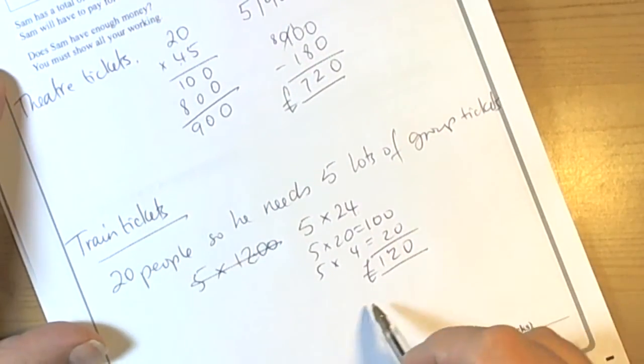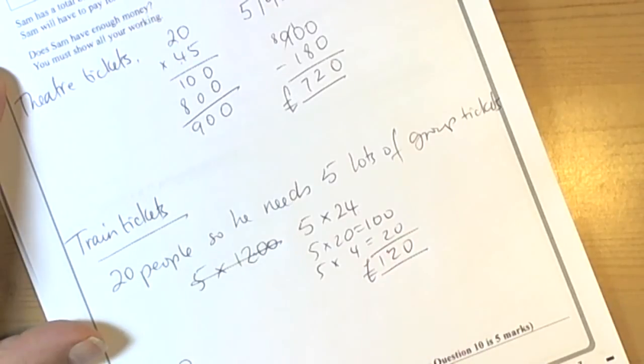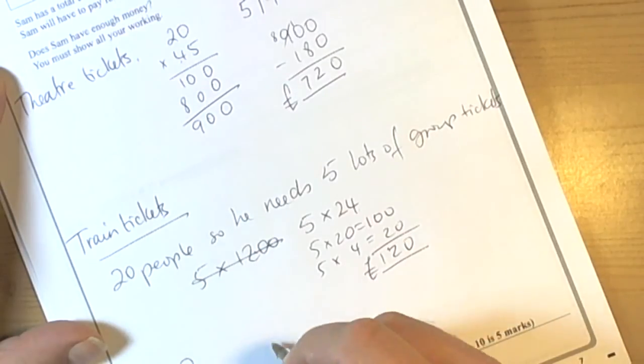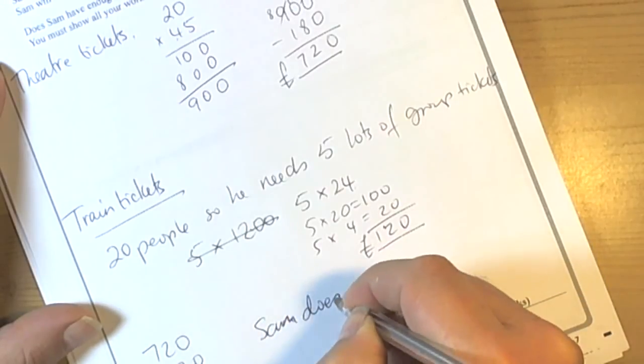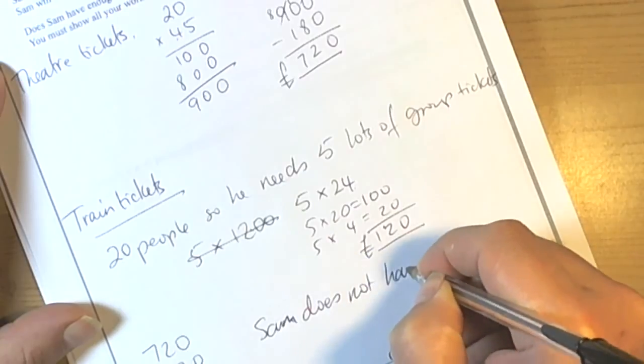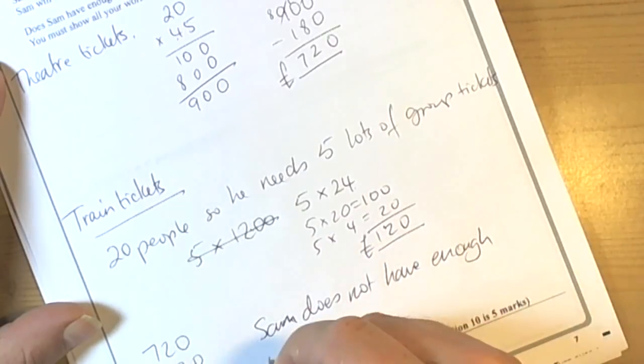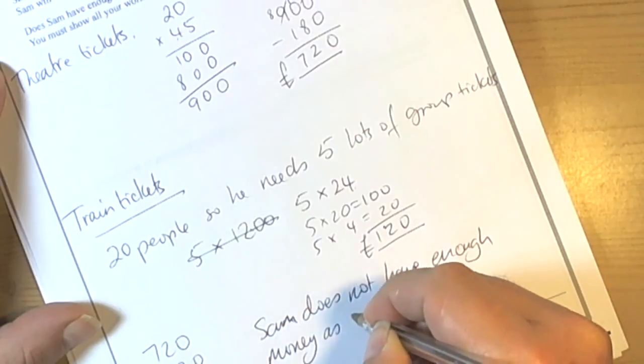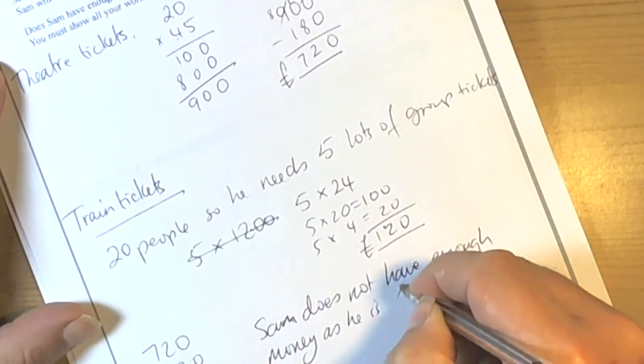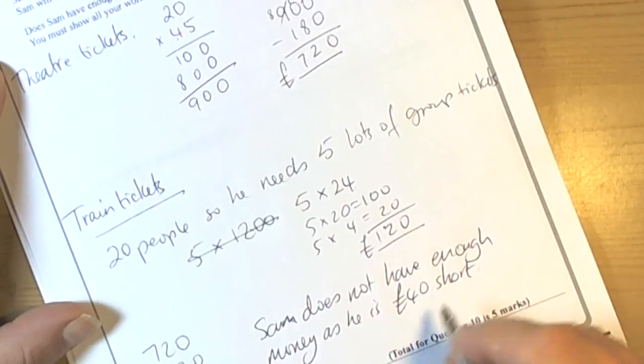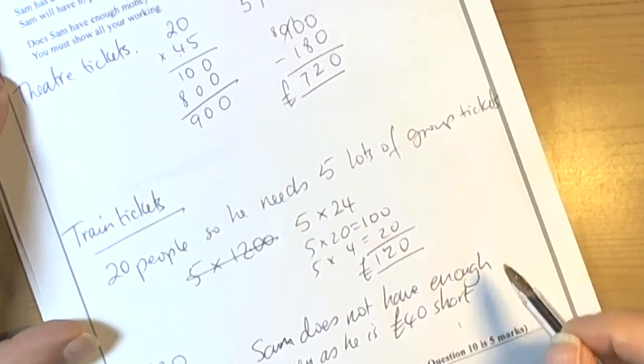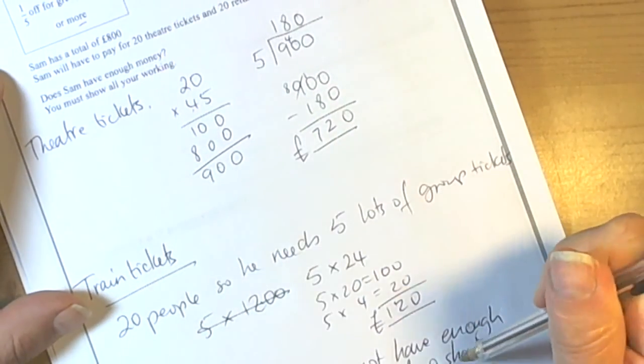So, so far then, it's 720 plus 120, 840 pounds, so the final answer to the start question has to be a written sentence. We're basically going to say, Sam does not have enough money as he is 40 pounds short. He needed 840, he's only got 800 pounds. That would be a good answer for that question.